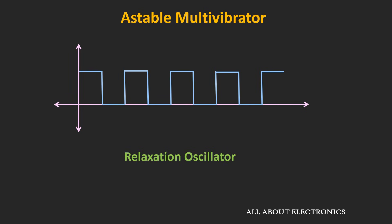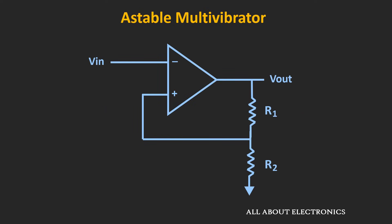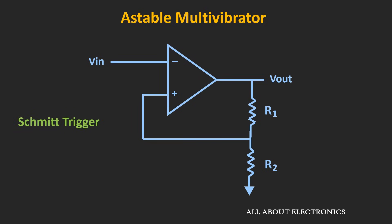Let's see how this astable multivibrator can be designed using the op-amp. To realize this astable multivibrator, the op-amp is used with positive feedback. When the op-amp is used with positive feedback like this, the circuit is known as the Schmitt trigger. We have already discussed the Schmitt trigger in detail in an earlier video, but for the sake of completeness, let us briefly understand this Schmitt trigger circuit.